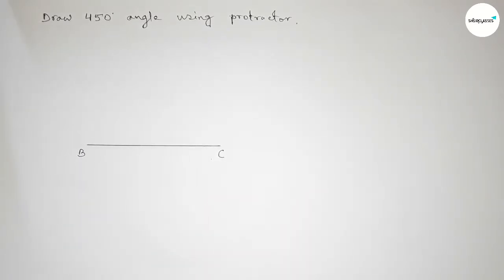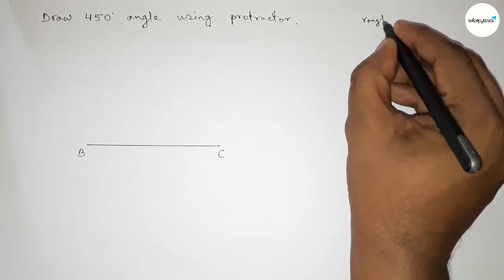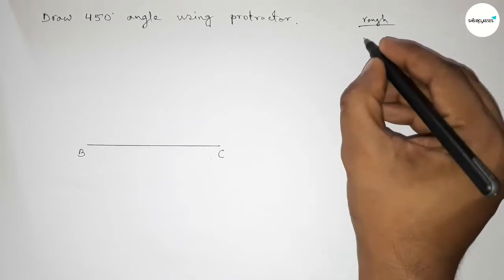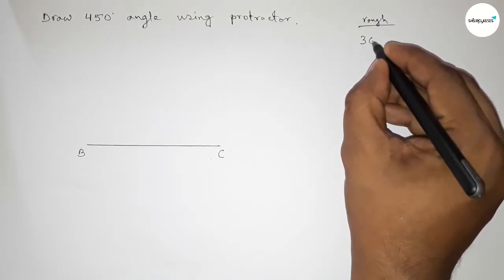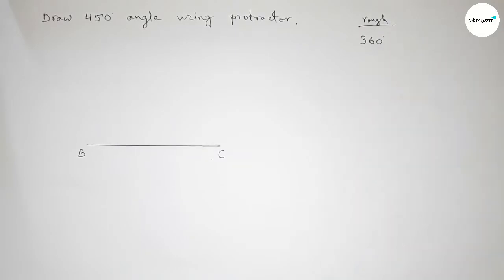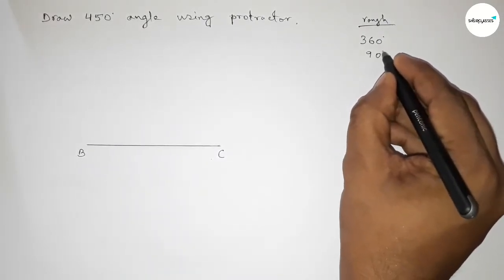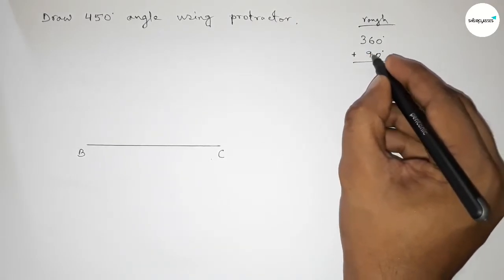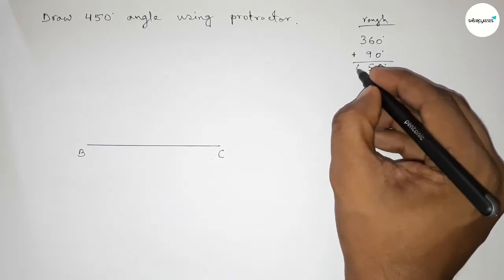Now roughly discussing here some important calculation. So if we add 90 degree angle with 360 degrees, adding 90 degrees with 360 degrees, then this is 0 and 9 plus 6 is 15, and this is 4, so 450 degrees.